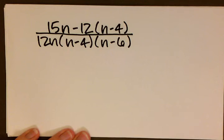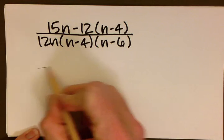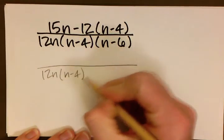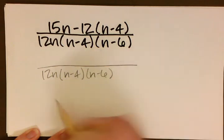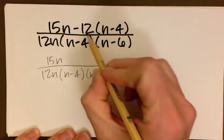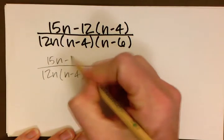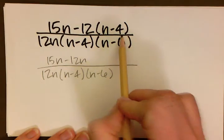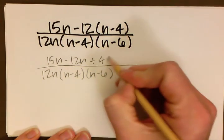And here we are. It's now time to do some more math. Once again, the denominator stays the same. That's common, and we've established that. This time we want to do some distribution in our numerator. So we have 15n, negative 12 times n is negative 12n, and negative 12 times negative 4 is a positive 48.